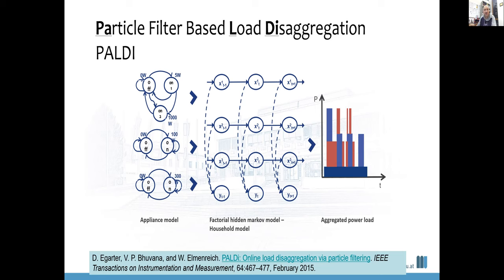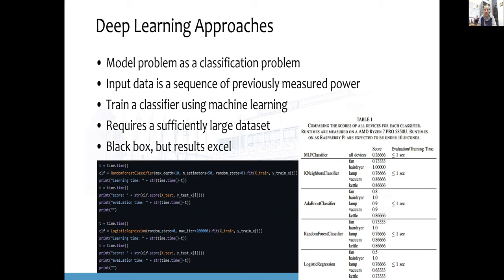Meanwhile, there is something of a silver bullet for solving this problem: we have data, and we need to find device information within it — which is a good problem for deep learning. We can model it as a classification problem: the input is a sequence of previously measured power values (e.g., using a moving window), and we train a classifier. This requires a sufficiently large dataset. It is a black-box model — the scores are better than traditional approaches, but we cannot explain exactly why the network arrives at its answers.